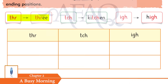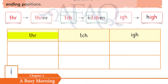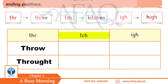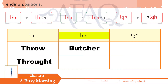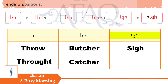The three trigraphs are: THR as in 'throw' and 'throat'; TCH as in 'butcher' and 'ketchup'; and IGH as in 'high' and 'thigh'. Practice these words in your columns.